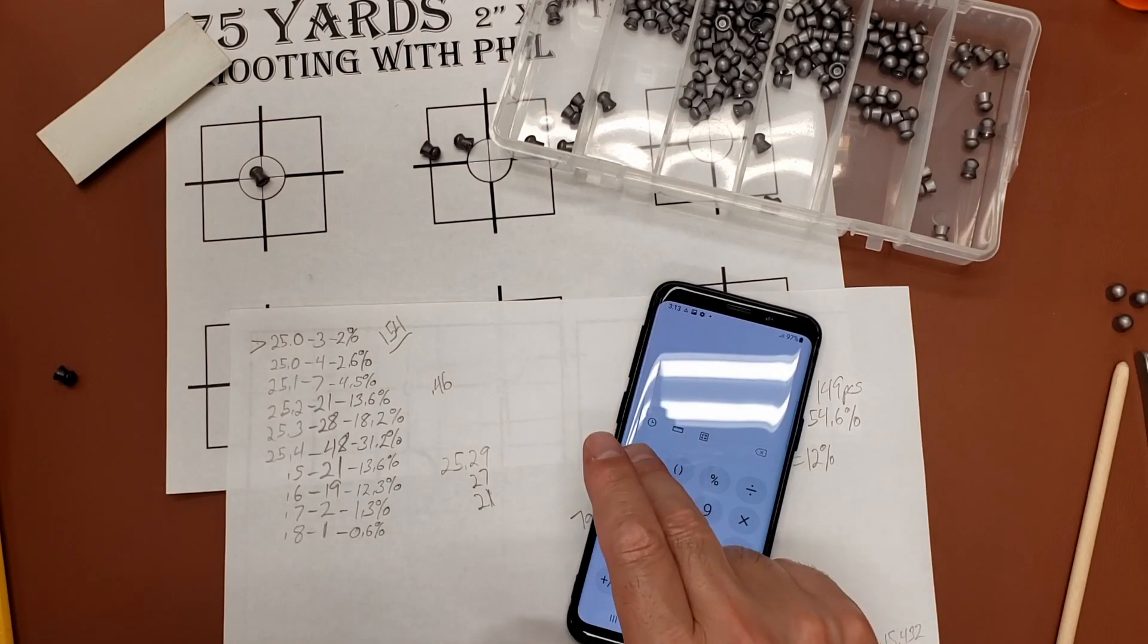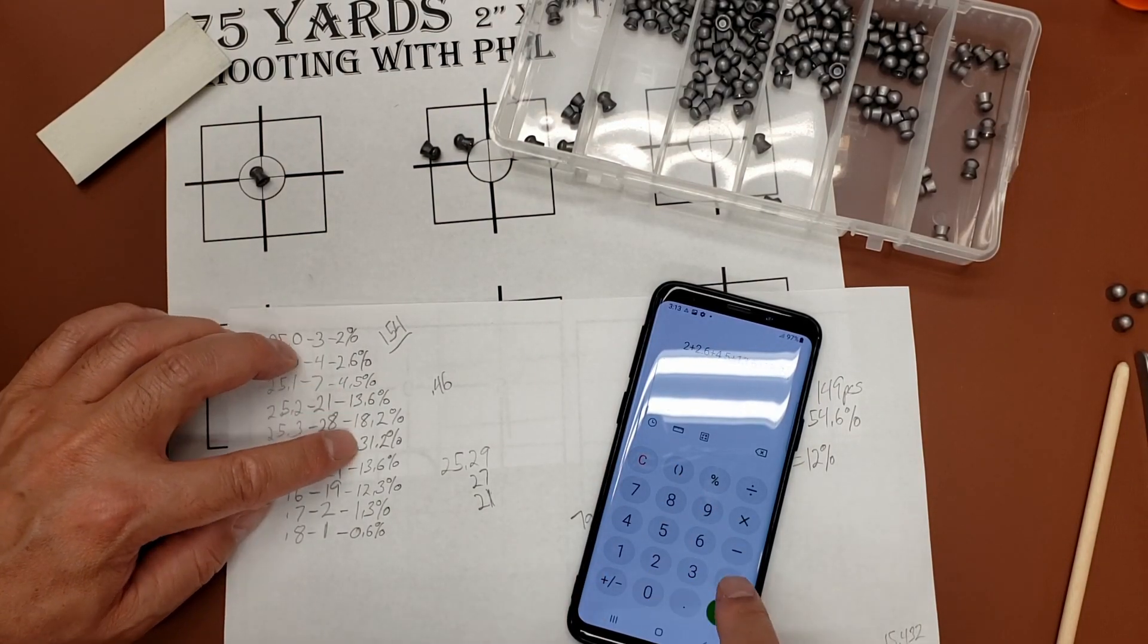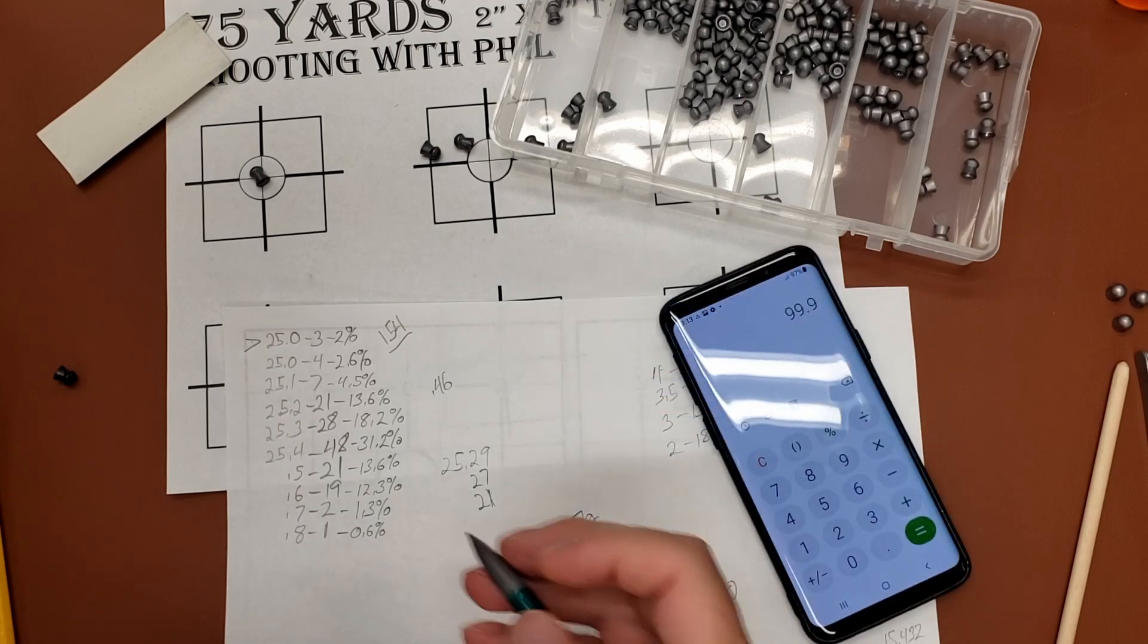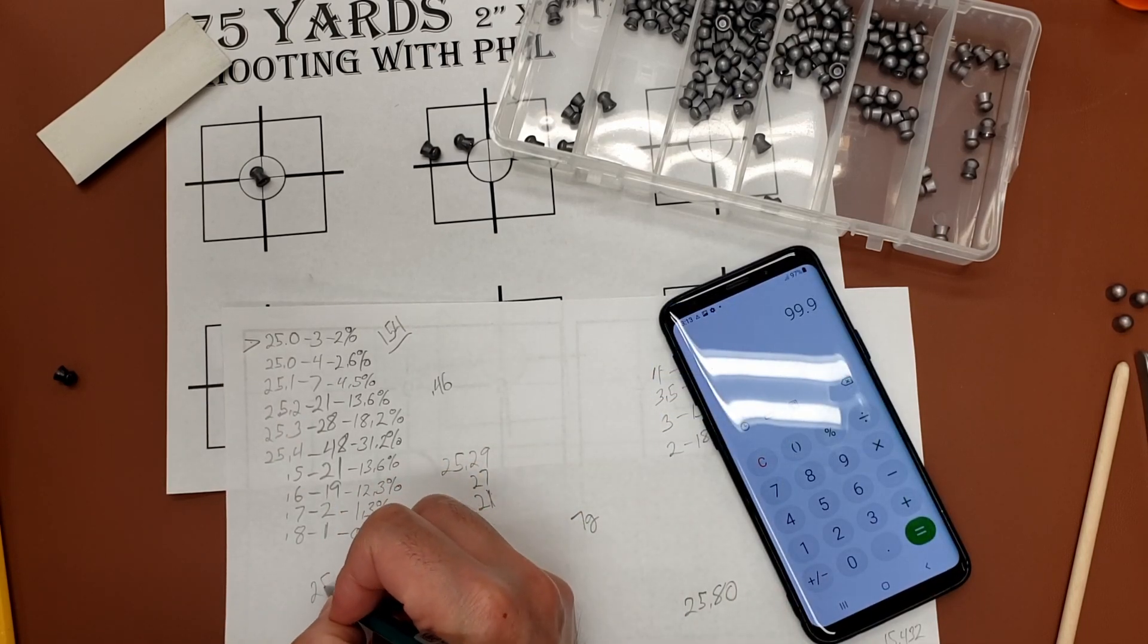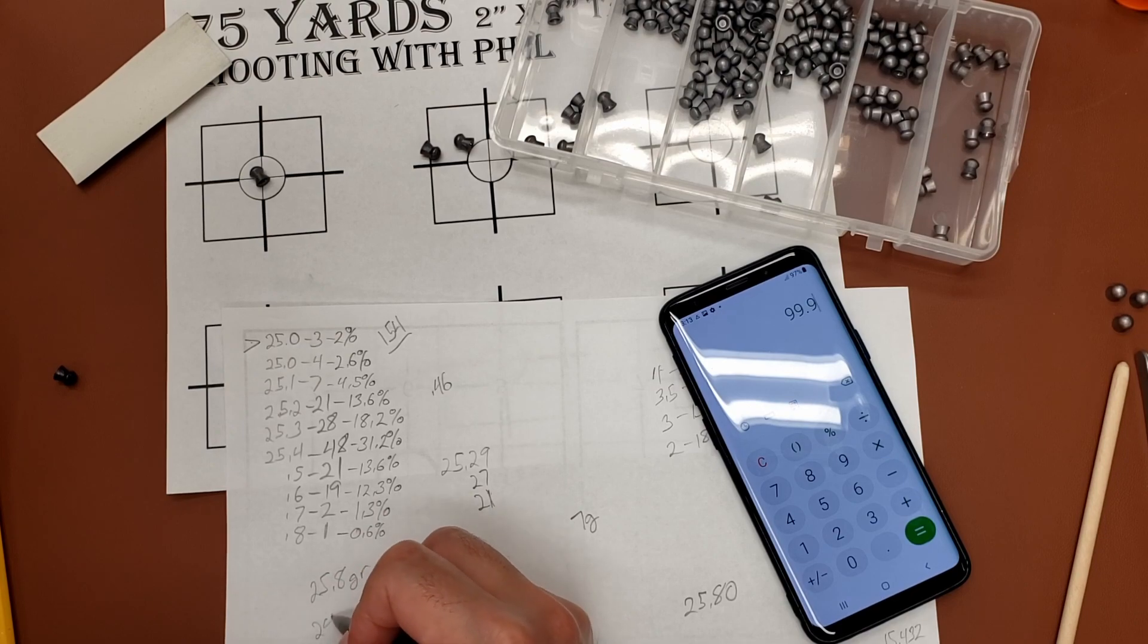Okay, does that add up to 100? 99.9, yeah. High of 25.8 and a low of 24.72.